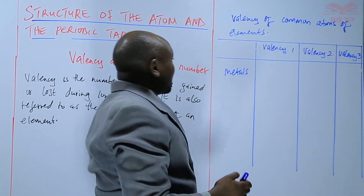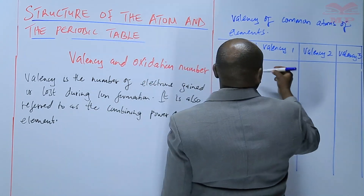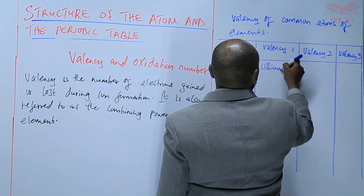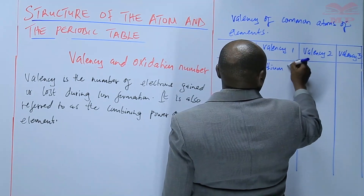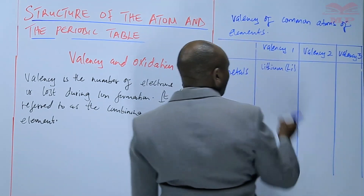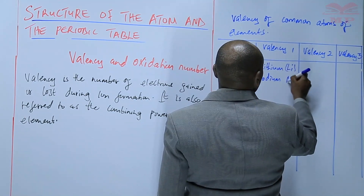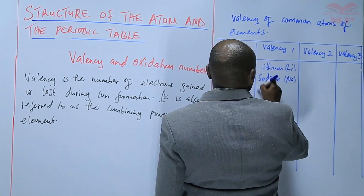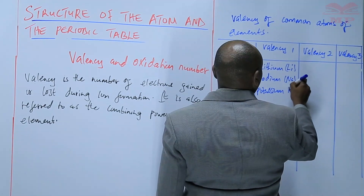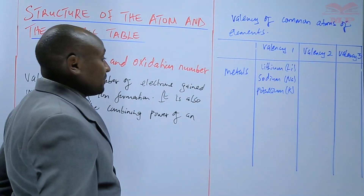The metals that have a valency of 1 include lithium — it's a group 1 element, hence the valency is 1 — sodium, and potassium. Those are basically group 1 elements.